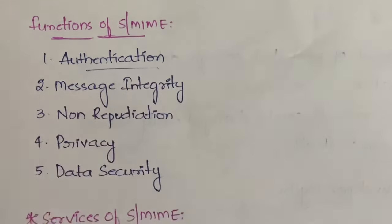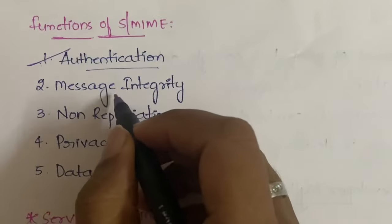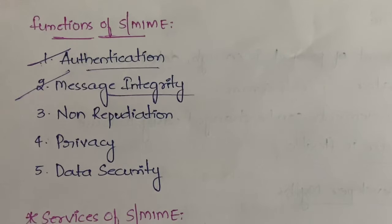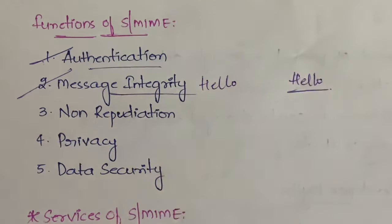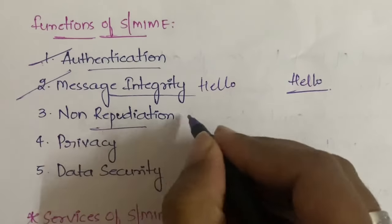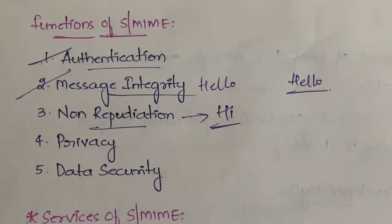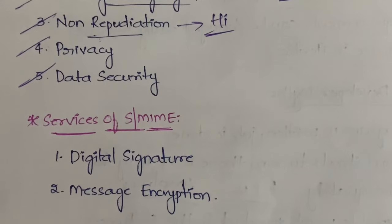The functions of S/MIME are: first, authentication — you can send data only to authenticated senders or receivers. Second, message integrity — the message should not be changed; if you send 'hello' it should arrive as 'hello'. Third, non-repudiation — once you send the data you cannot deny it; if you sent a message saying 'hi' you cannot claim you didn't send it. Fourth, privacy and data security.